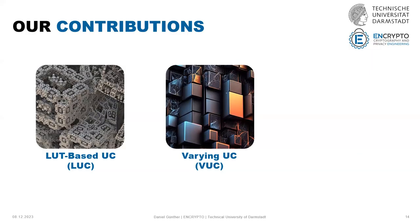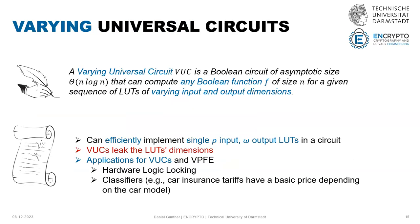This is our second contribution. In a varying universal circuit, we have a Boolean circuit of size Θ(n log n) that can compute any Boolean function, for a given sequence of lookup tables of varying input and output dimensions. However, this sequence of lookup table dimensions is leaked — it is information revealed about the function — and we need to observe whether this reveals too much information.